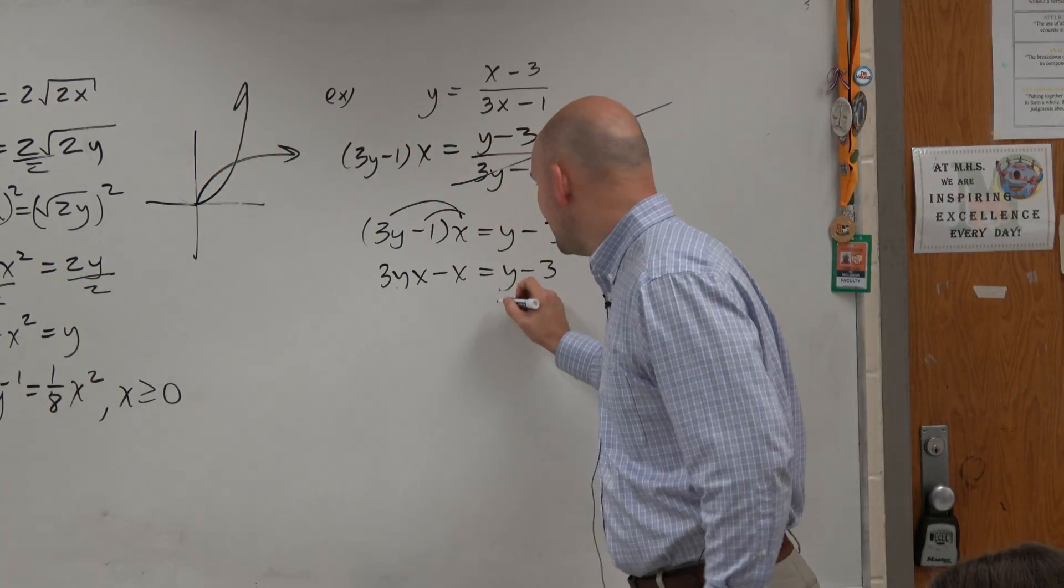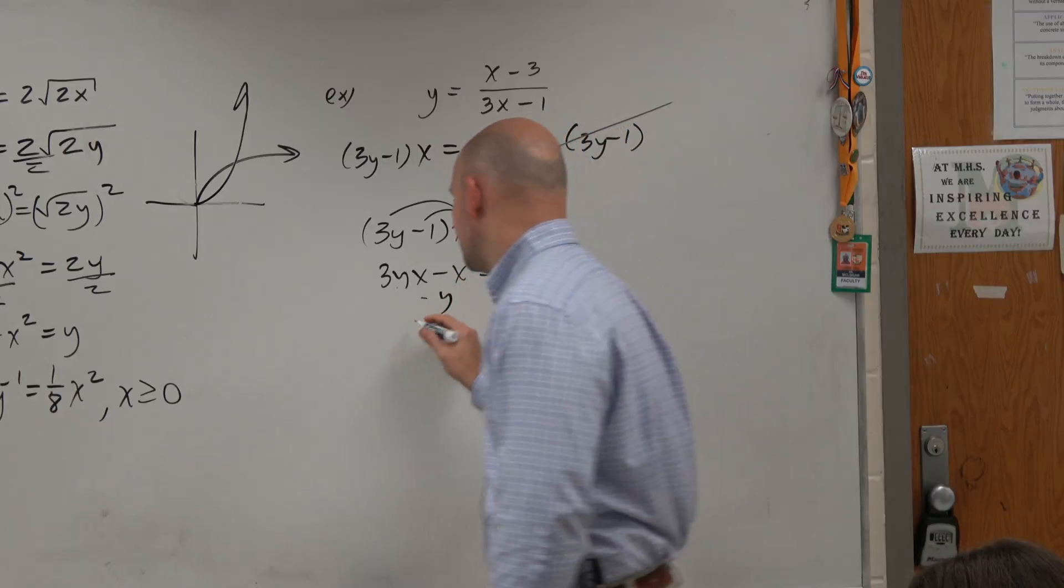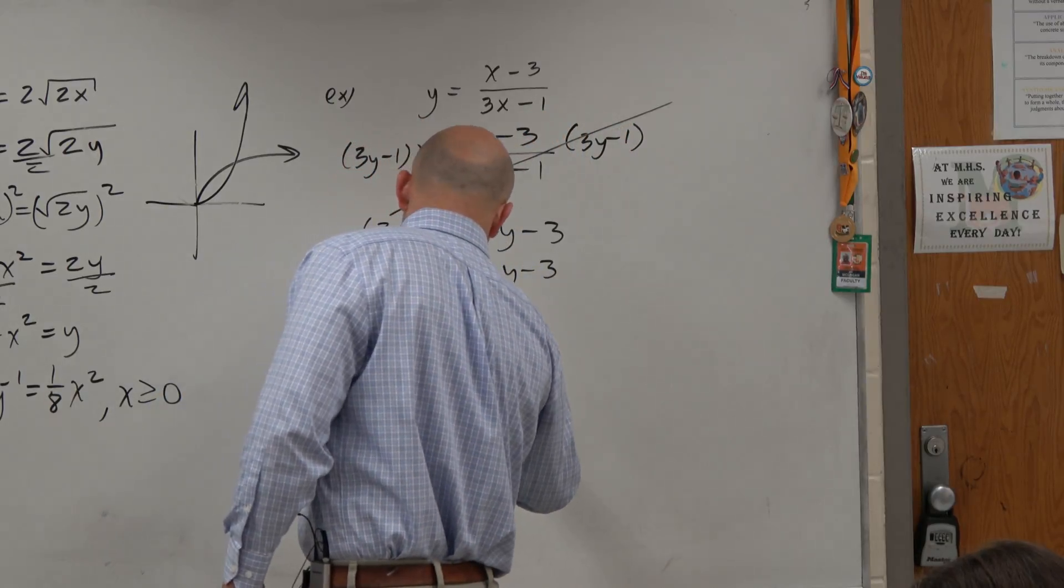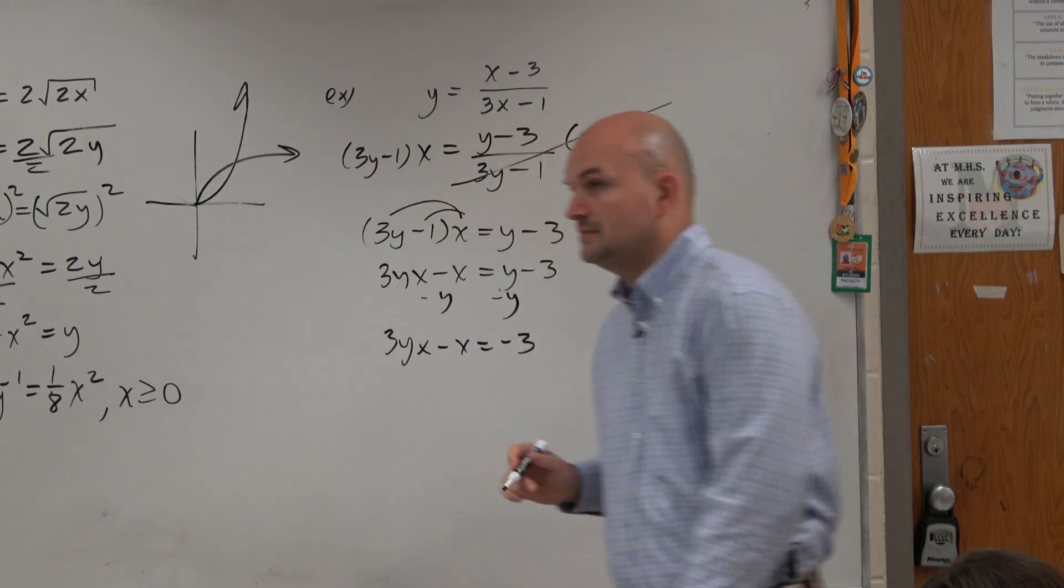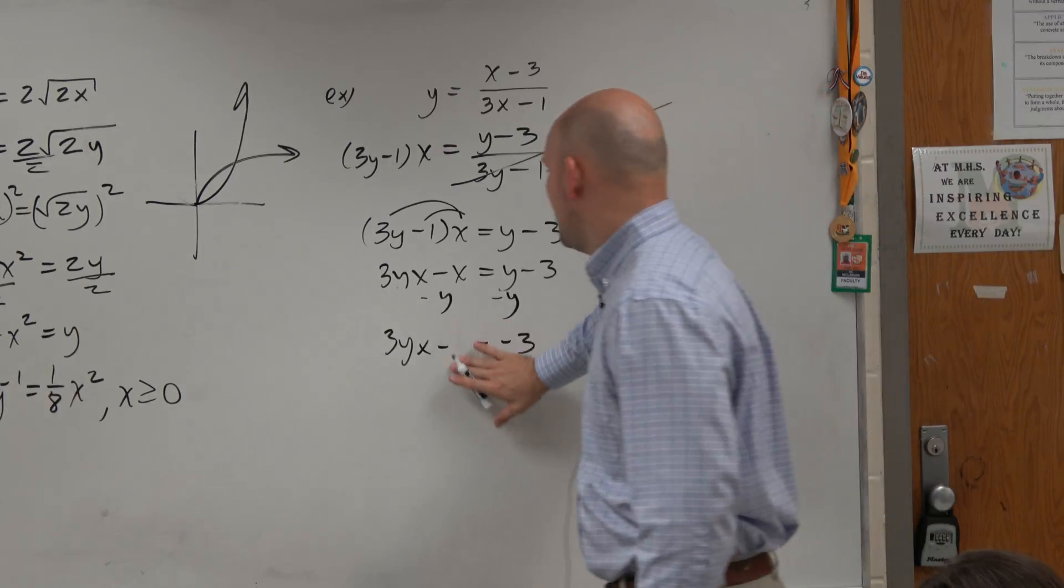Get the y's to the same side. Subtract the y on both sides. 3yx minus x equals minus 3. Now, oops, minus y minus x.